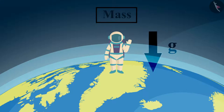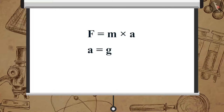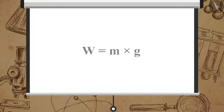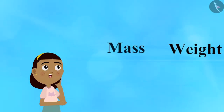As we have learned, force is equal to mass multiplied by acceleration. Here the acceleration is the acceleration due to gravity. Therefore we can say F = M × G. Denoting the weight by W, we can write this equation as W = M × G.